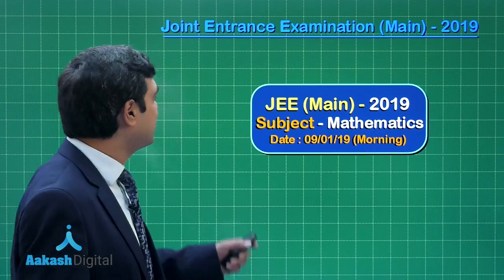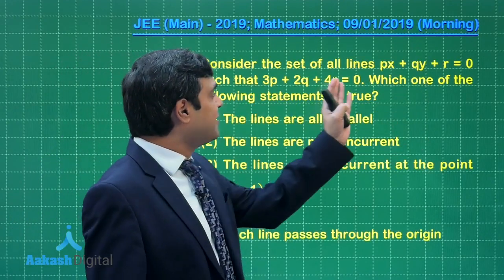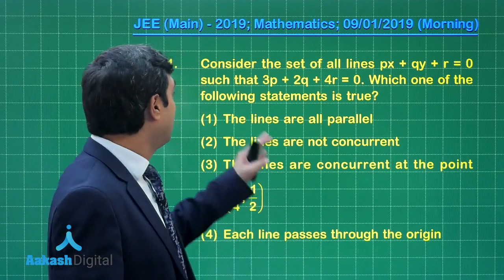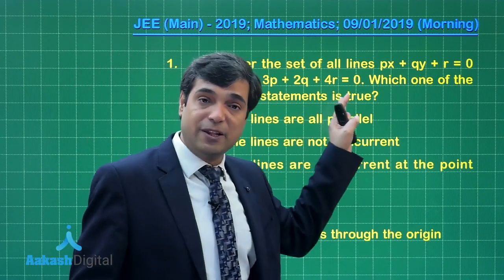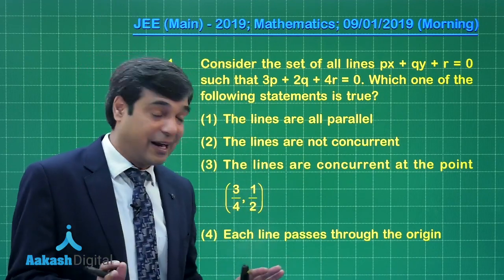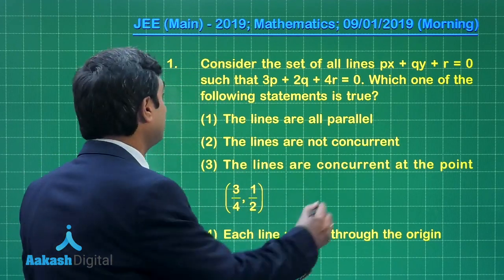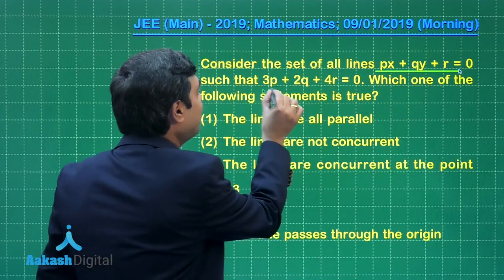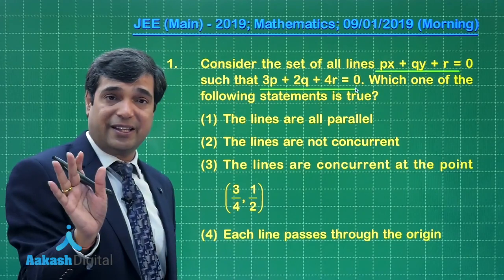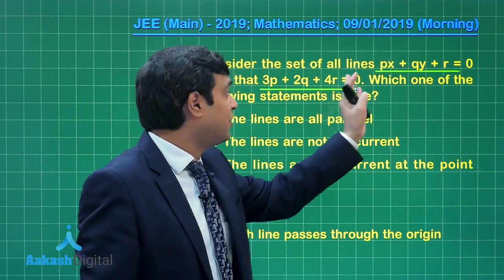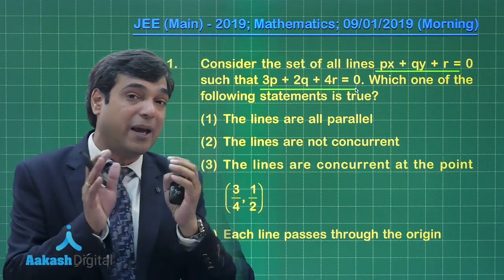Here is the first question: Consider the set of all lines px + qy + r = 0 such that 3p + 2q + 4r = 0. Which one of the following statements is correct? Important thing here is one set of lines is given and one constraint is given. You can rearrange by substituting any of the three in this one and get a set of lines with some variable lambda, or you can directly divide this equation by 4.